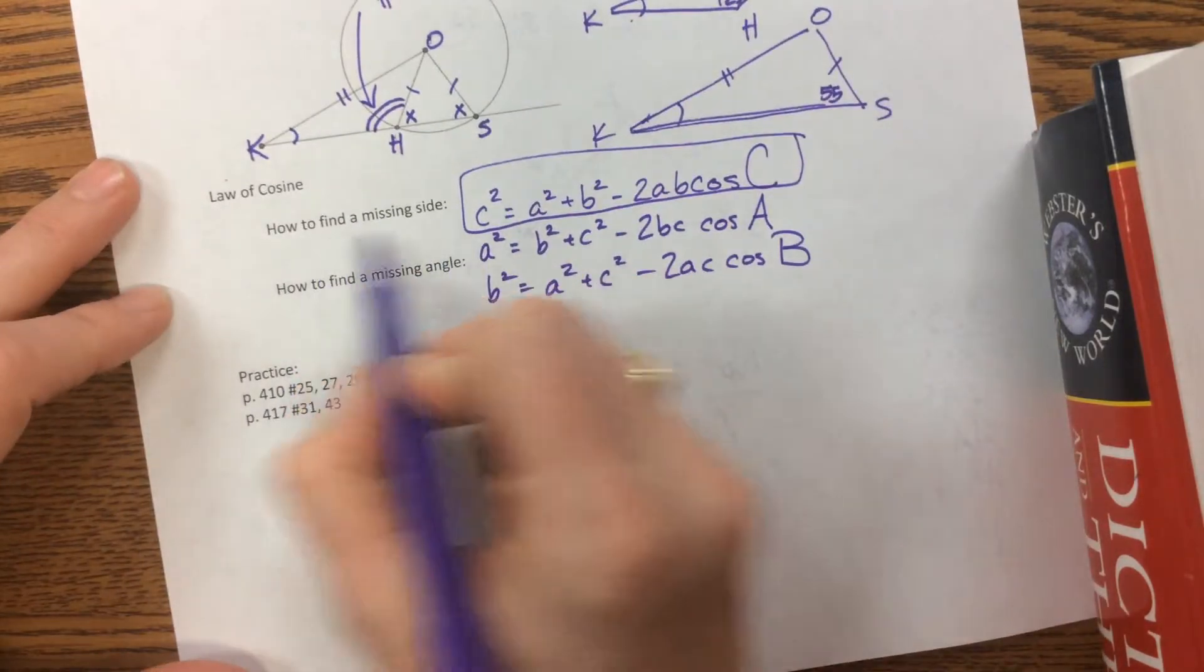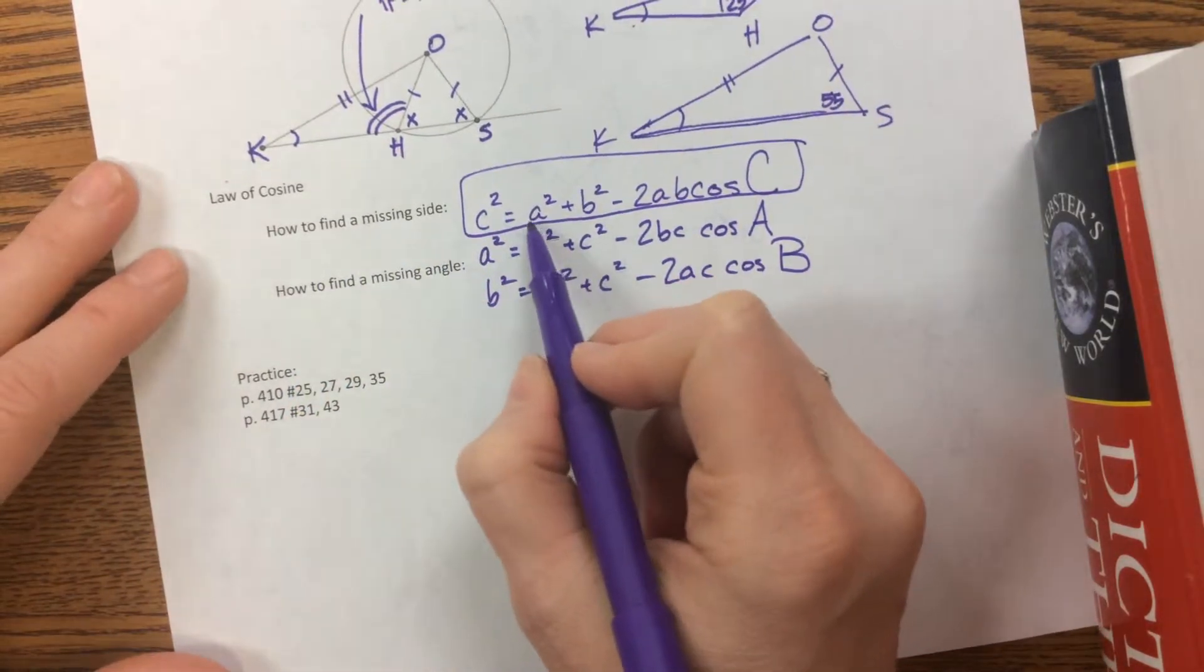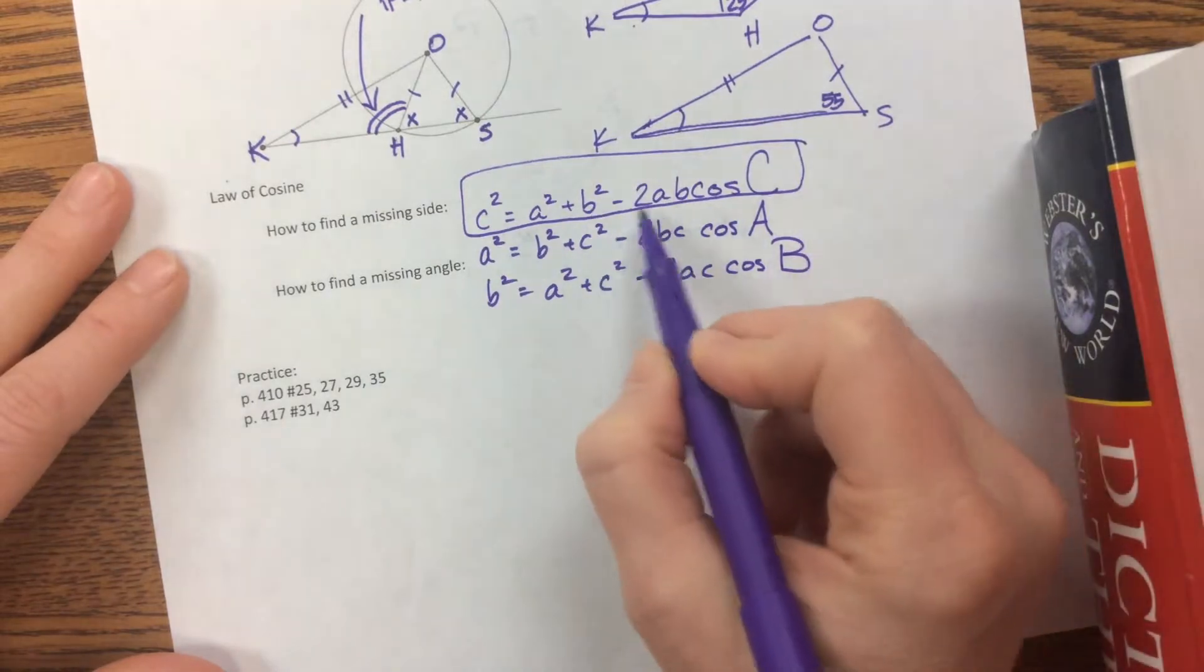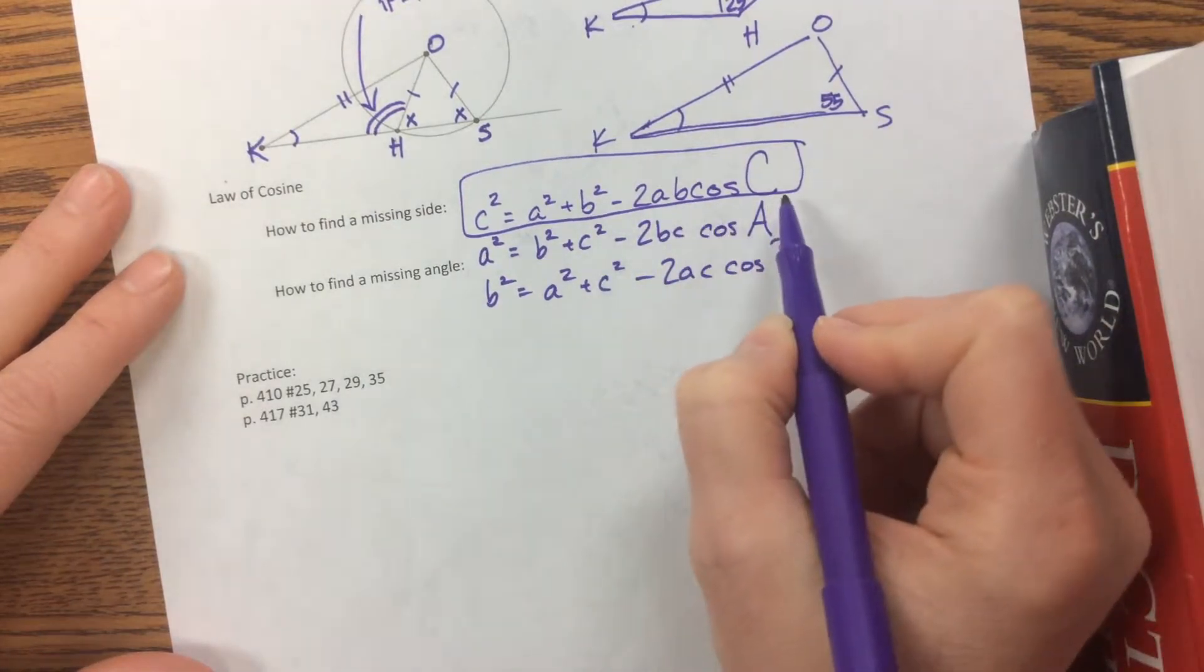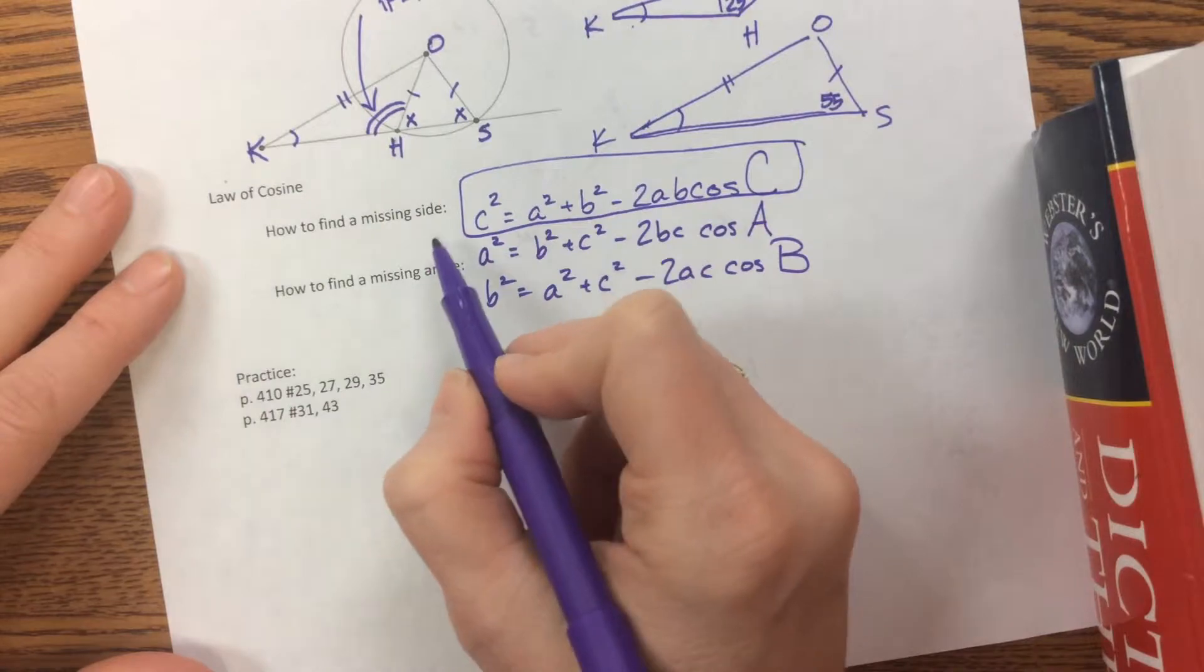It's also, so this is how to find a missing side. Notice we'll take the length of a squared, the length of b squared, minus 2 times the length of a times the length of b times cosine of angle c.